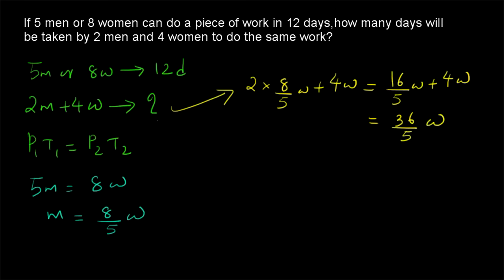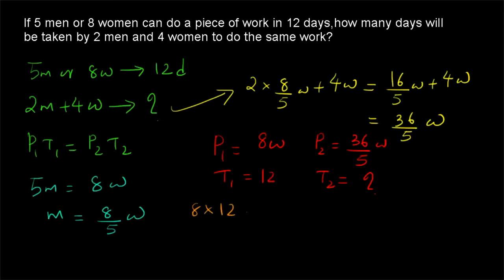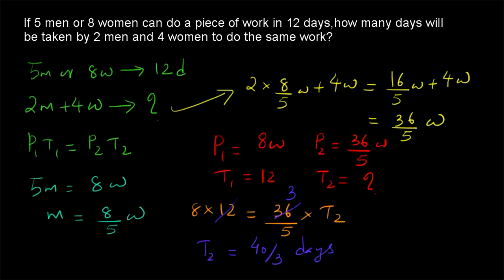Substituting: P1 = 8 women, T1 = 12 days, P2 = 36/5 women. So 8 × 12 = (36/5) × T2. Cancelling gives T2 = (8 × 5) / 3 = 40/3 days, which as a mixed fraction is 13⅓ days. Thank you for watching.